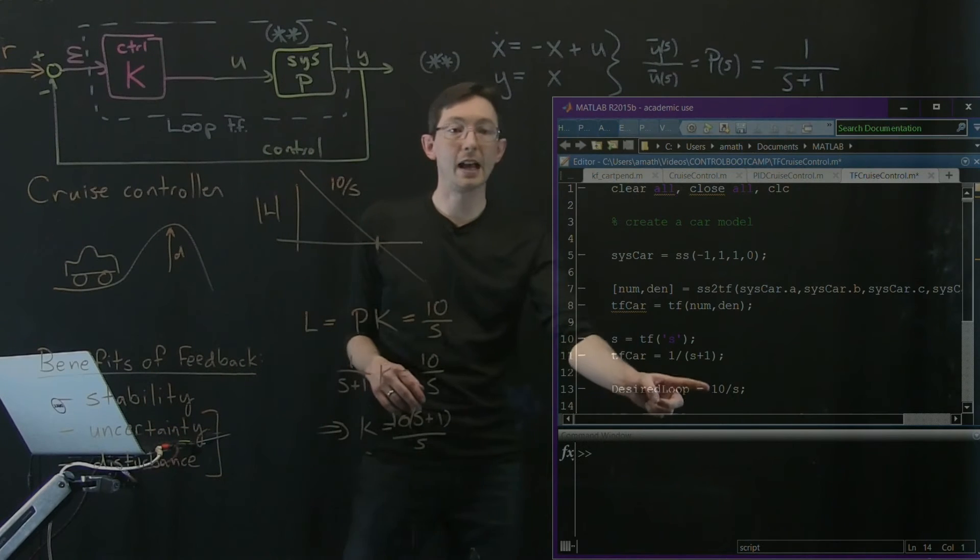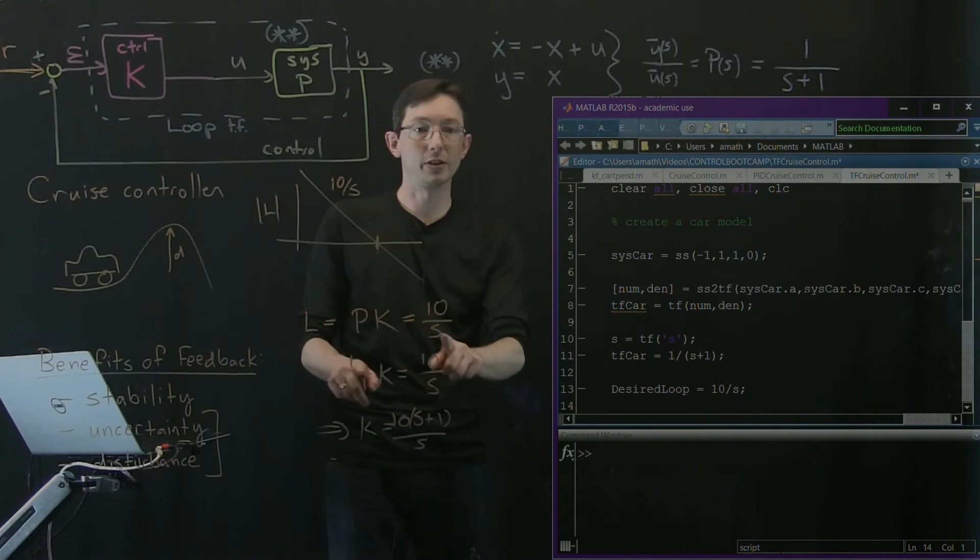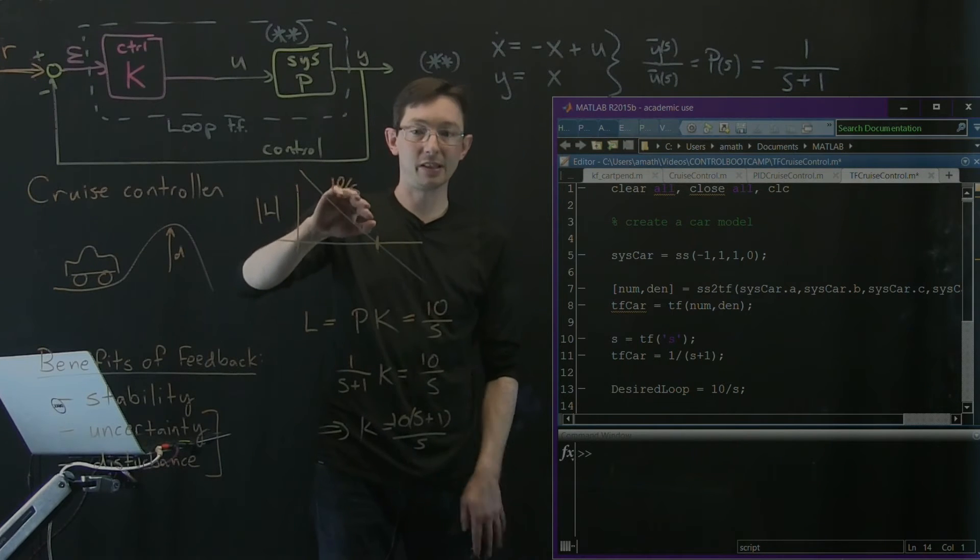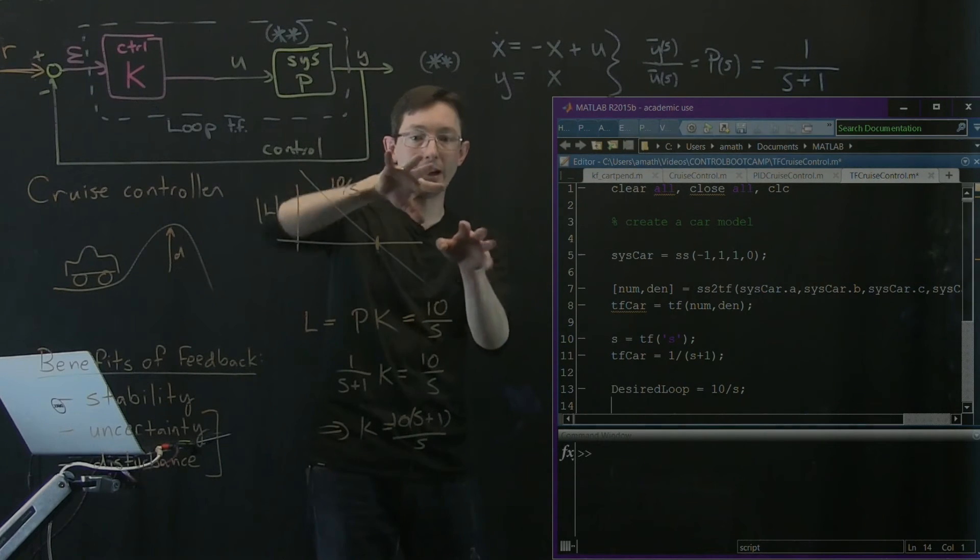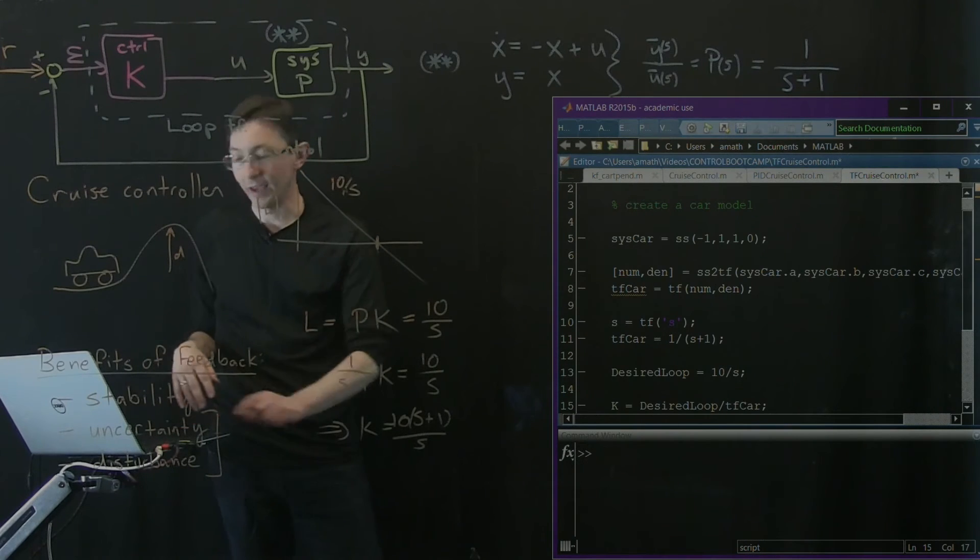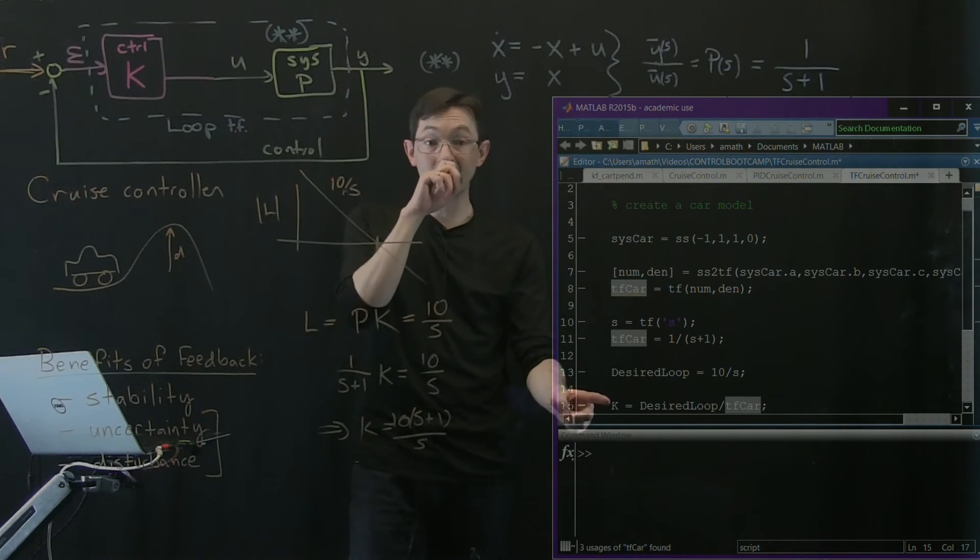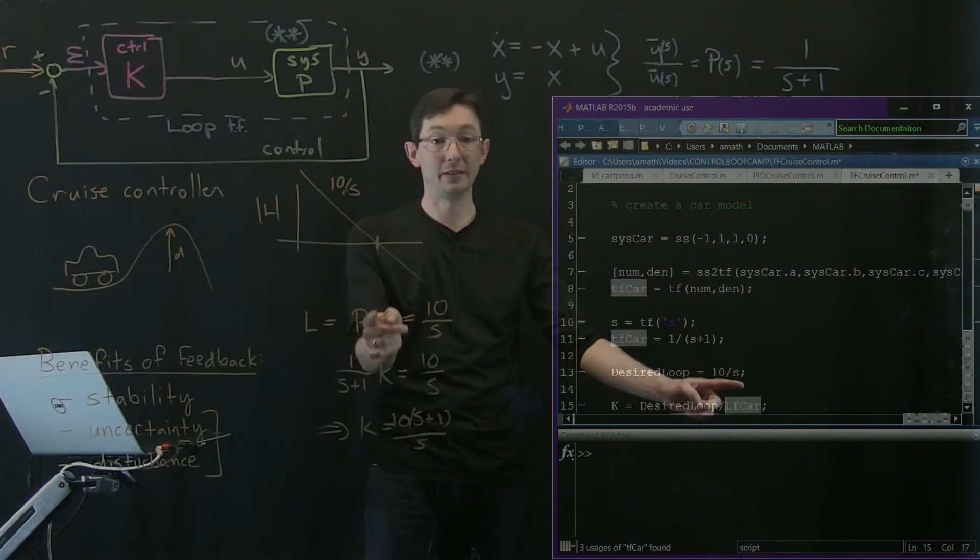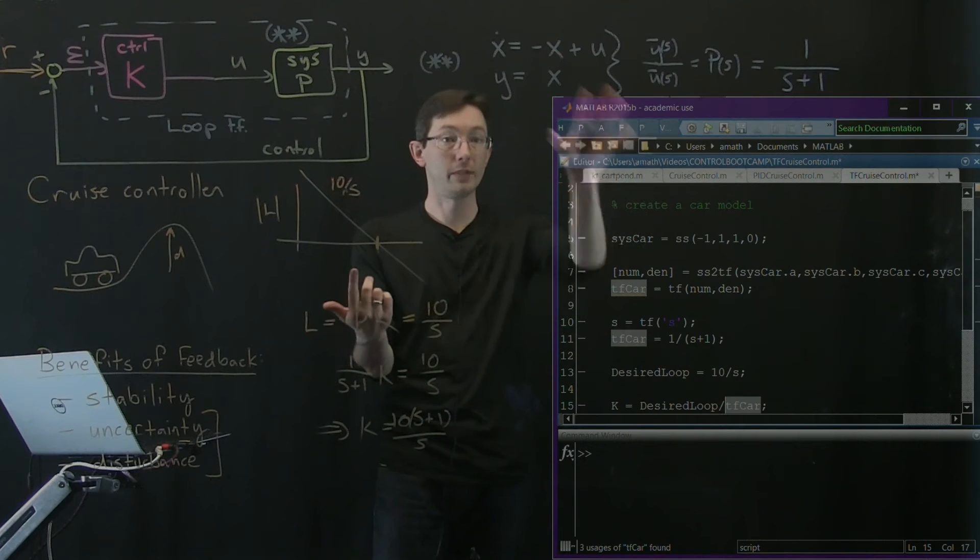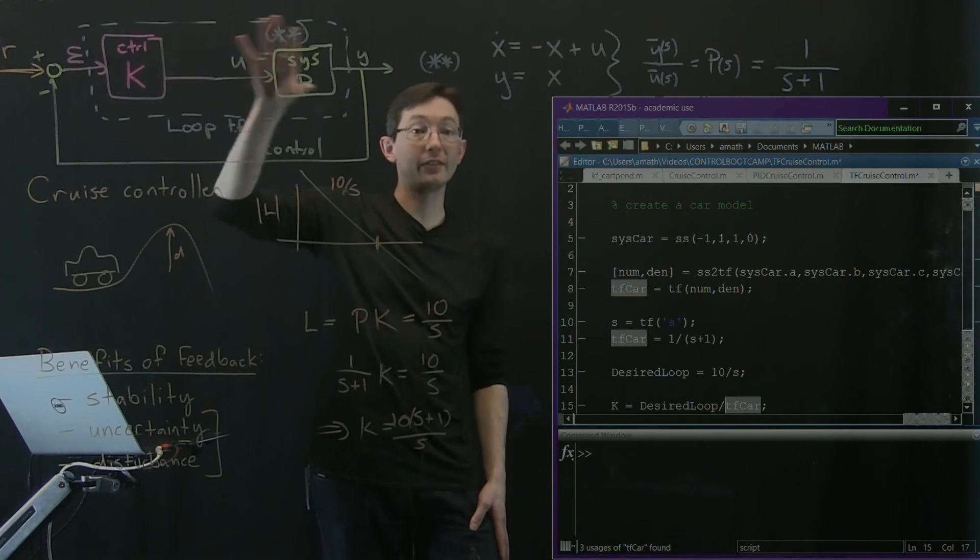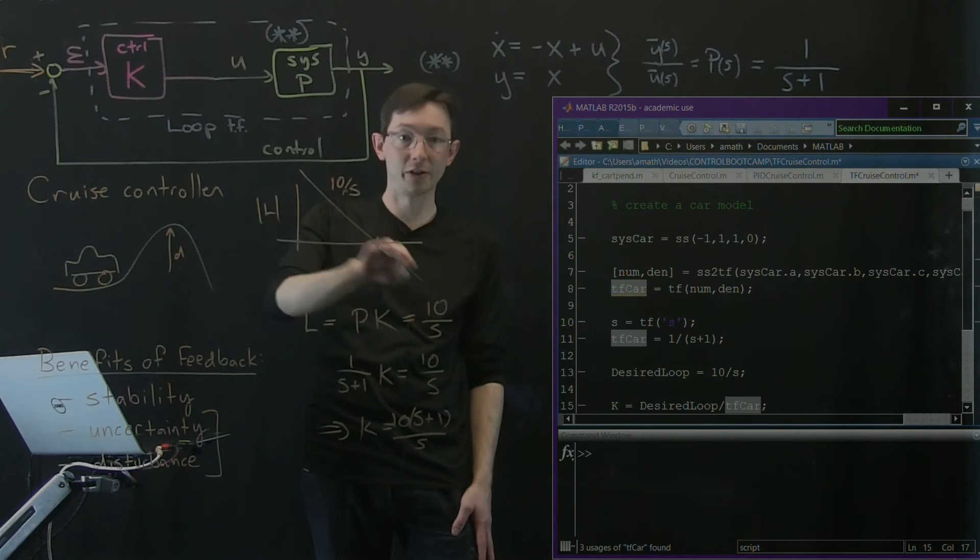And then, remember, our desired loop, this desired loop function is 10 over s. It's just some big gain times an integrator, so that moves it up and to the right. It gives us higher bandwidth performance. And then I'm going to make this very naive k where I just take my desired loop divided by p, divided by my transfer function of my car. That's p. And that's my controller k that gives my loop transfer function this desired shape of an integrator.